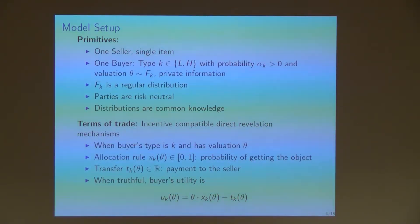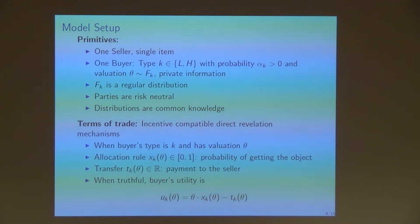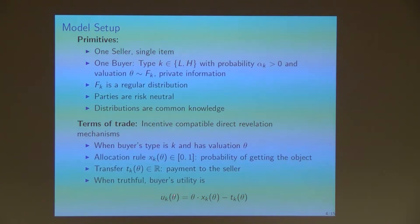Given the primitives, we move to the terms of trade. By the revelation principle, we can focus on incentive compatible direct revelation mechanisms. If a buyer is of type k and has valuation θ, the buyer is allocated the object according to some allocation rule x_k(θ) and will pay to the seller a transfer t_k(θ). When the buyer is truthful, his net utility is u_k(θ) = θ · x_k(θ) − t_k(θ).